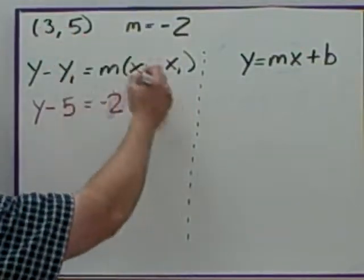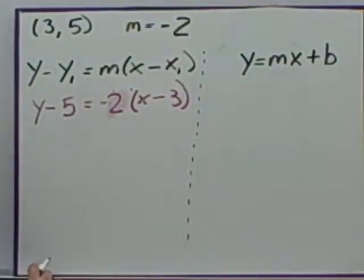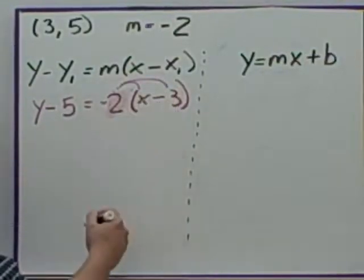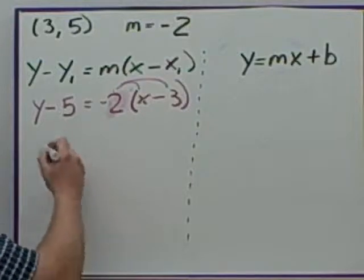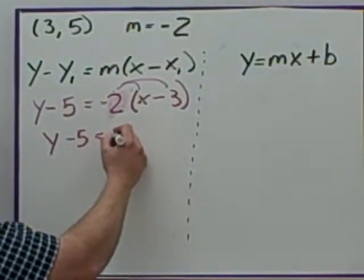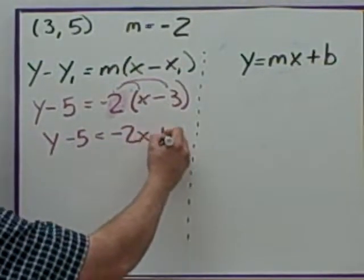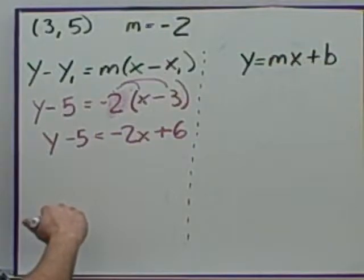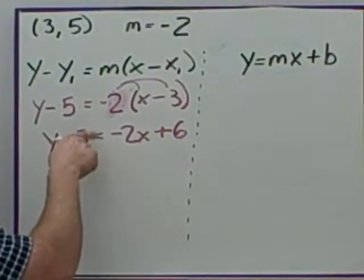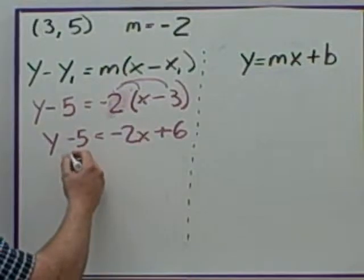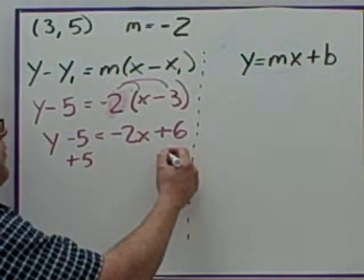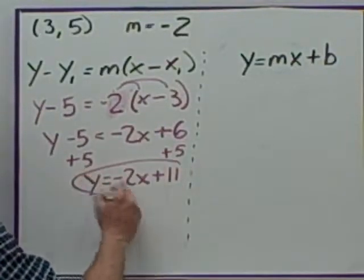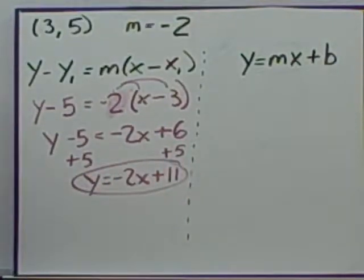The slope is negative 2, times x minus the x-value of 3. Now you have to apply the distributive property to get rid of the parentheses. You get y minus 5 equals negative 2x plus 6, because negative times a negative gives you a positive. Then add 5 to both sides to isolate y, and you get y equals negative 2x plus 11 — that's your equation in slope-intercept form.